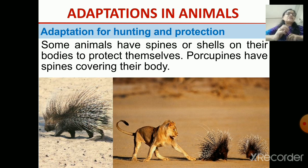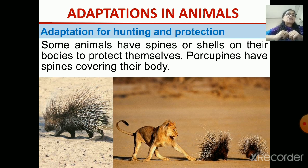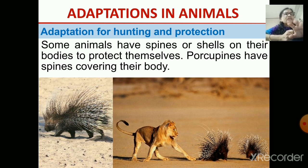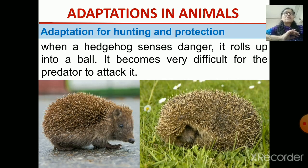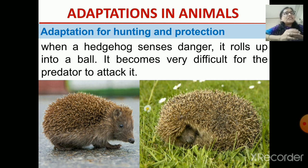Here is another way of defending — it is not camouflage but another way. In some animals like porcupines, they have got spines on their body. If some animal goes near it, they will get hurt. Even the lion is afraid of the porcupine. The porcupine's body is fully covered with spines. Here is the hedgehog — it also has spines, and what it does is roll itself into a ball so that it becomes very difficult for the predator to attack it.